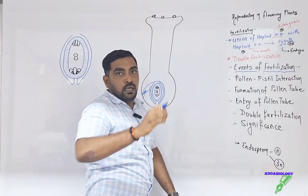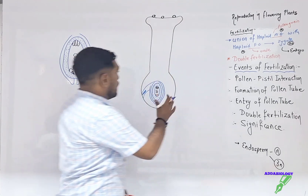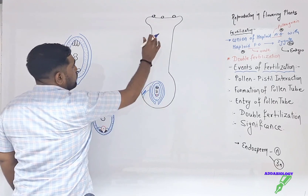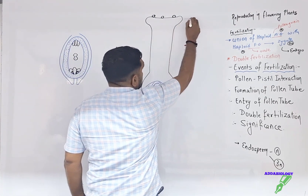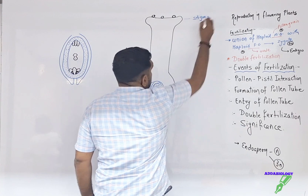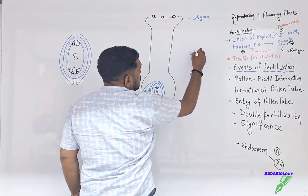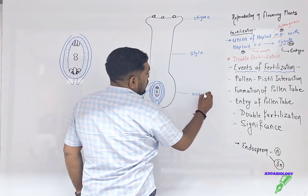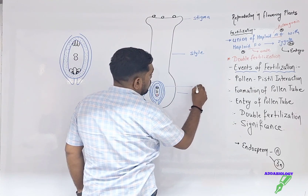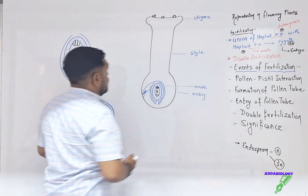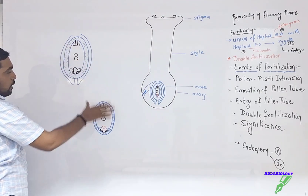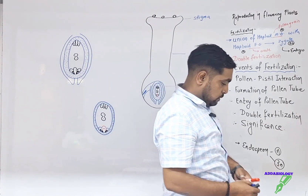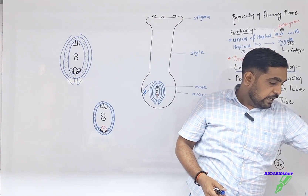To understand the different events that take place during double fertilization, I have already drawn a diagram of the gynoecium with different parts labeled. This is the stigma, this part is the style, the lower part is the ovary, and inside the ovary is the ovule. I have taken out one part of the ovule to study the process.